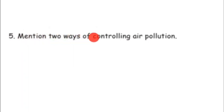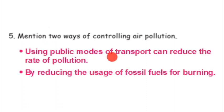Fifth brief answer: two ways of controlling air pollution. First, using public modes of transport can reduce the rate of pollution — if we use fewer individual cars, there will be less pollution. Second, by reducing the usage of fossil fuels for burning, we can help control air pollution.